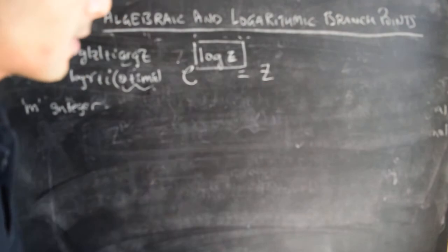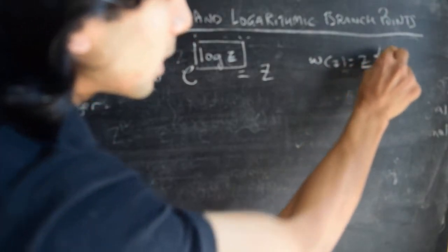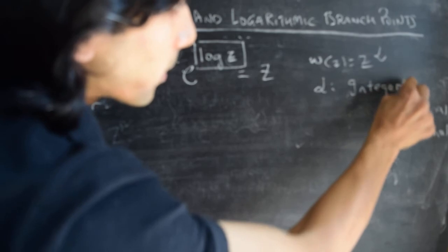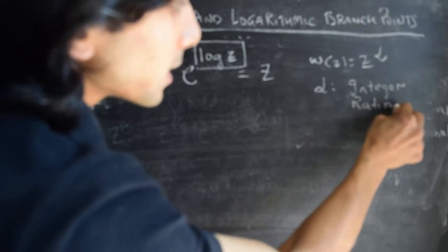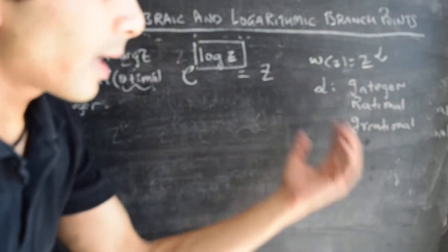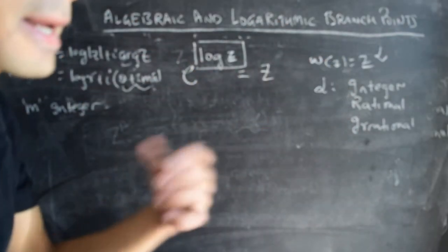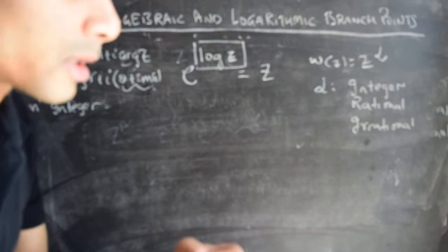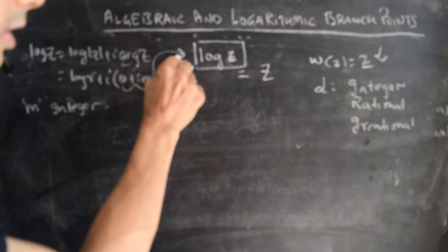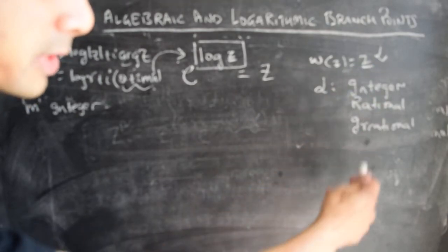In this video, let's use this definition of the complex log function and talk about functions of the form w(z) equals z to the power of alpha, where alpha could be any of the different choices — for instance, alpha could be an integer, it could be a rational number, or something we haven't talked about before, which is that it could also be an irrational number. We'll use this function as a prototypical example and keep alpha arbitrary to begin with, then analyze these different cases.